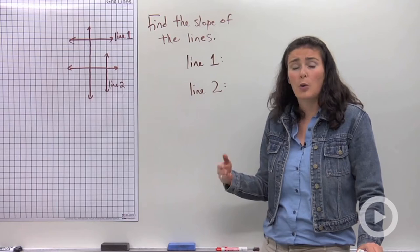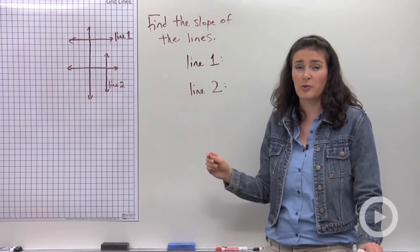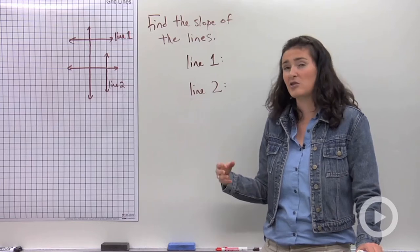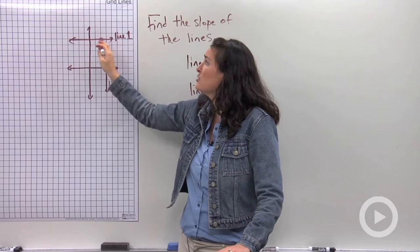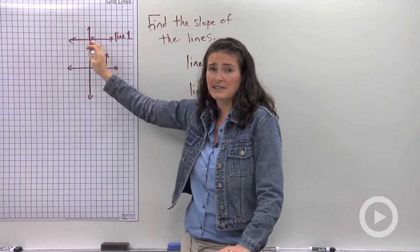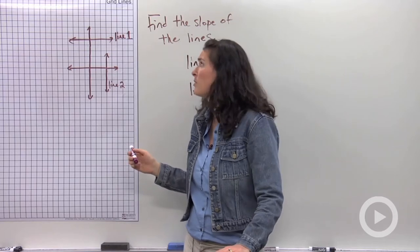What a lot of students would do is try to draw a slope triangle, or find two points that the line goes through and use the slope formula. Here's what I mean. Look at line one. I could use any points along this line and try to draw a triangle or put them into the slope formula.